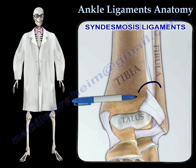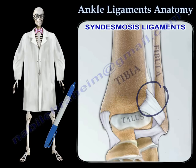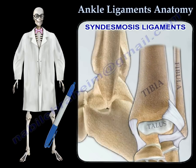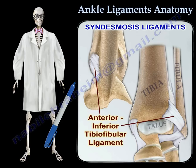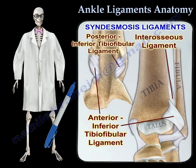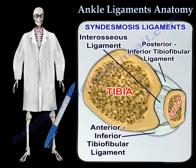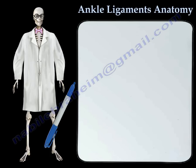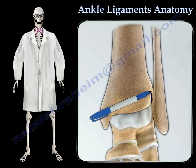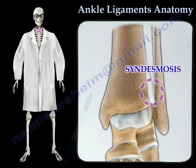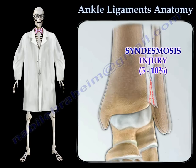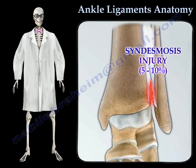And finally, the ligaments of the syndesmosis. The syndesmosis is made up of the anterior inferior tibiofibular ligament, the interosseous ligament, and the posterior inferior tibiofibular ligament. The connection of the tibia and fibula is called the syndesmosis. An ankle injury common to athletes is an ankle syndesmosis injury, otherwise known as a high ankle sprain, because it involves the ligaments above the ankle joint.